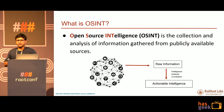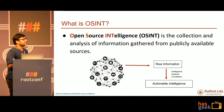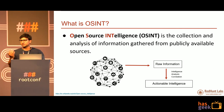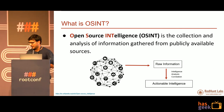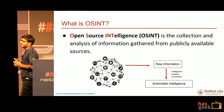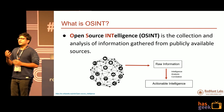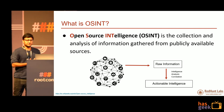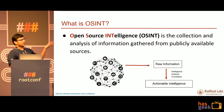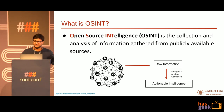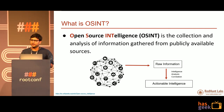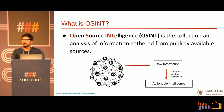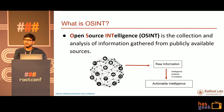So what is open source intelligence? Basically it is collecting information from the internet, analyzing it, applying intelligence on top of it, and then getting actionable intelligence out of it. To represent that simply: find raw information, apply intelligence on top of it, analyze it, correlate that information, and then you have something you can use for taking action.